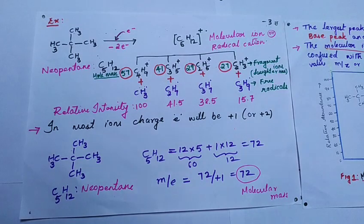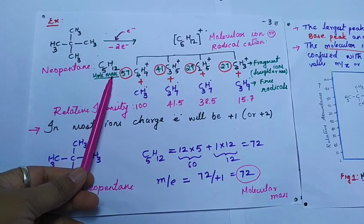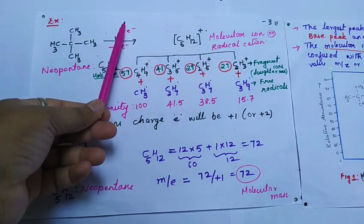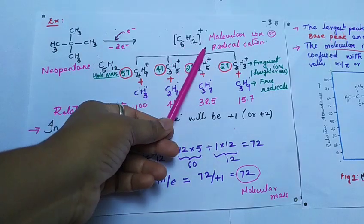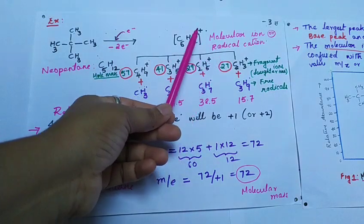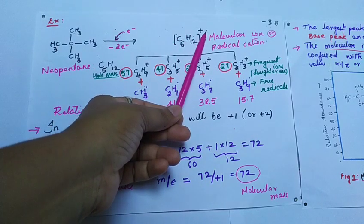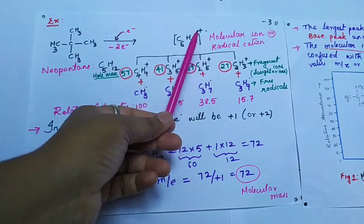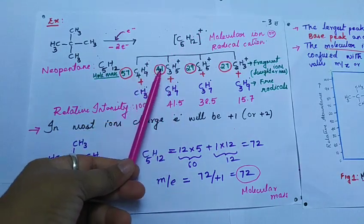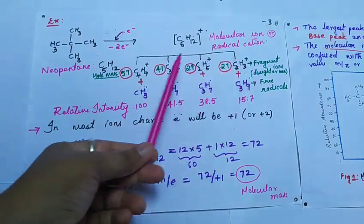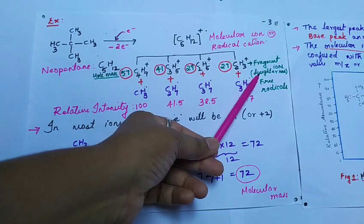Now let us understand the principle with an example. Let us take neopentane, that is C5H12. When neopentane is bombarded with a beam of electrons, there is formation of a molecular ion or radical cation. The plus sign indicates one electron is removed and the dot represents one unpaired electron. The molecular ion being unstable undergoes fragmentation and results in formation of four fragment ions or daughter ions.